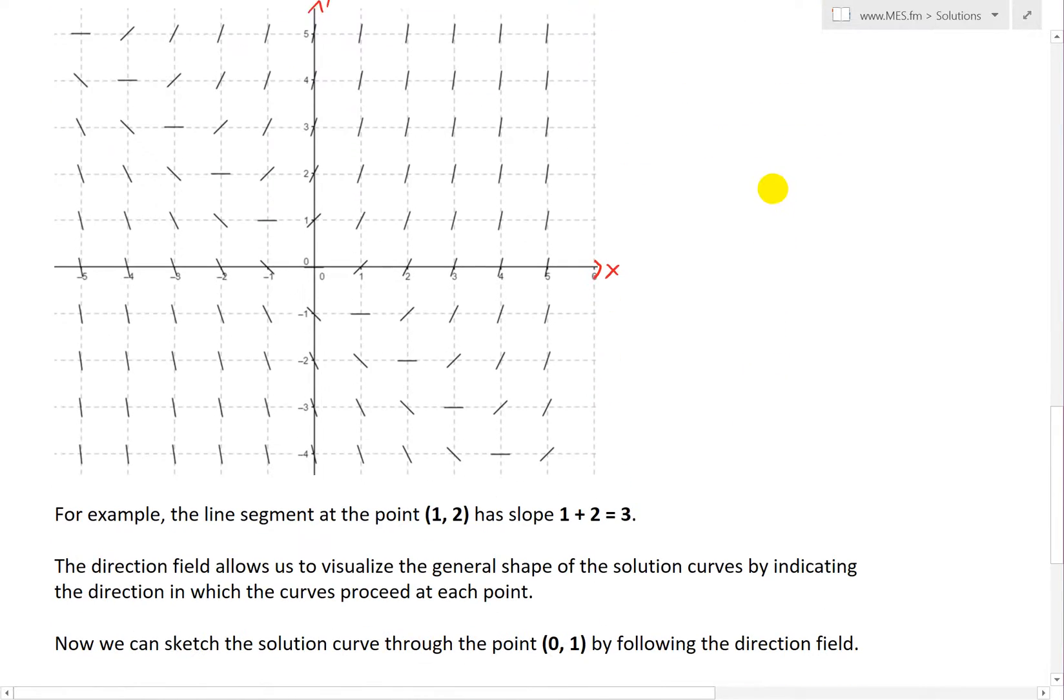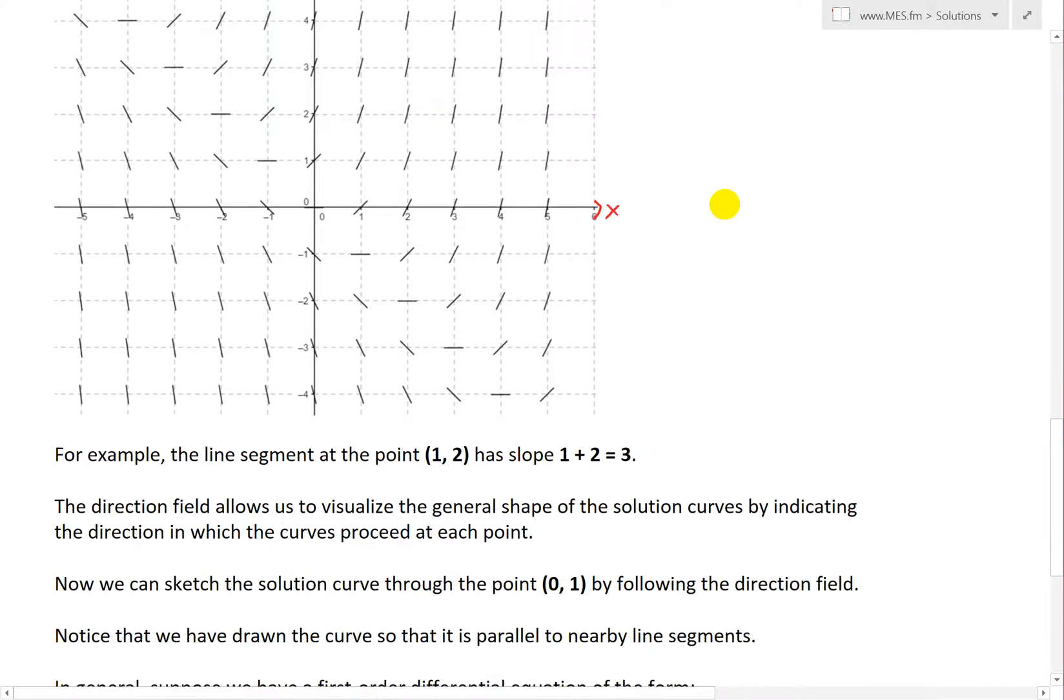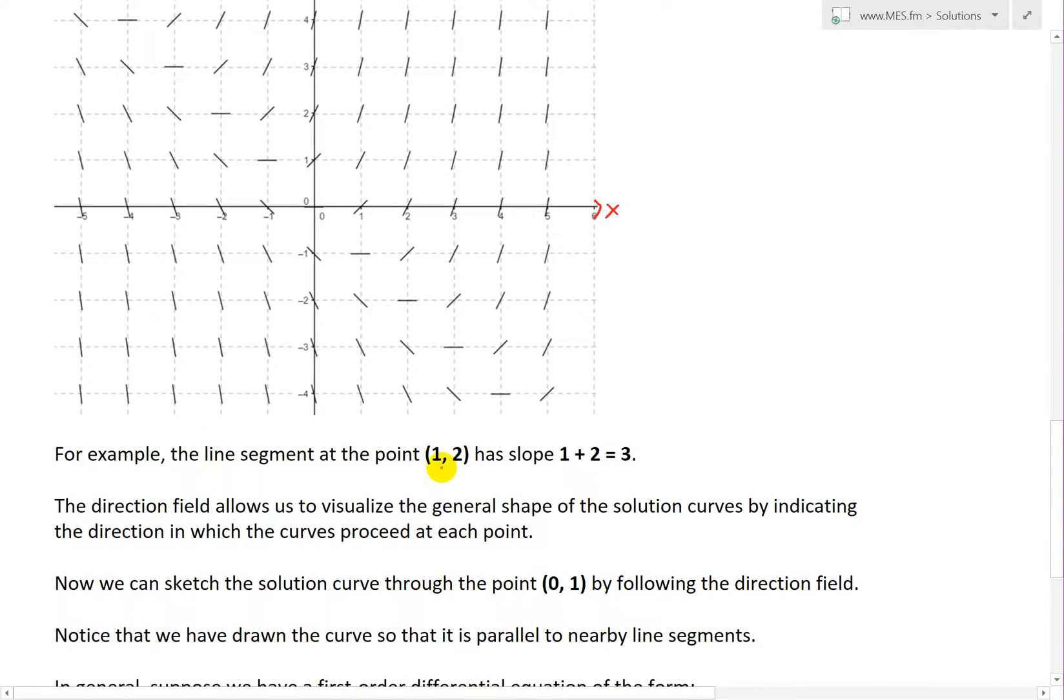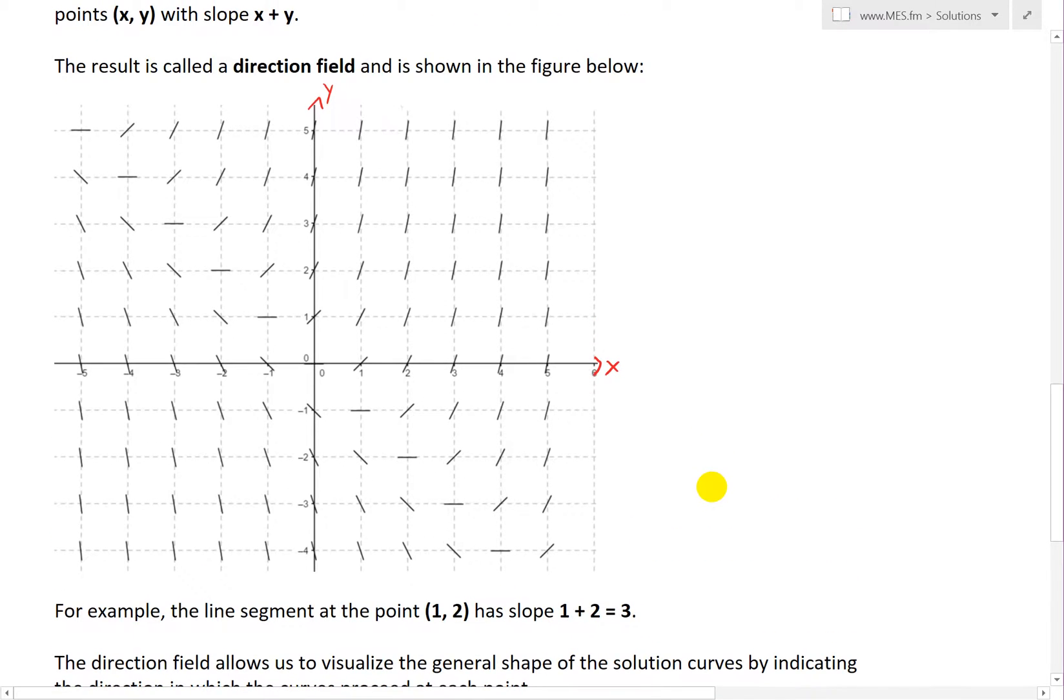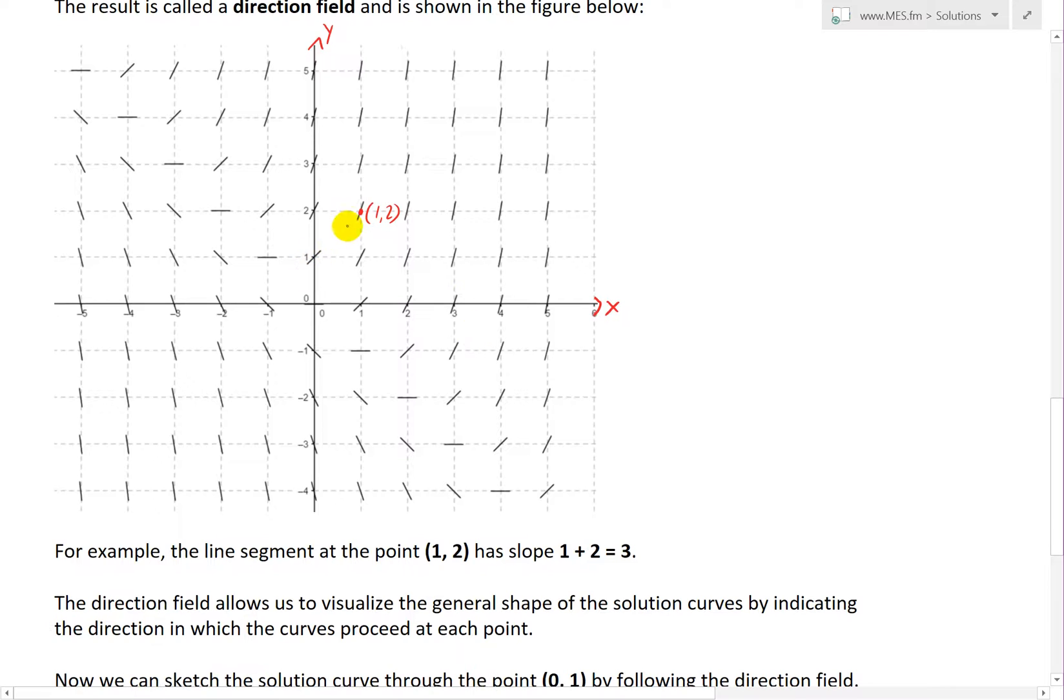For example, if we're looking at this, now that we have all these, I'll show you how you can go about graphing it out. The line segment at the point (1, 2) has a slope 1 + 2 = 3. Go to (1, 2) right here, and as you can see, this is at (1, 2) and the slope is 3, which is steeper than this one right here, which is our (0, 1) point which has a slope of 1.